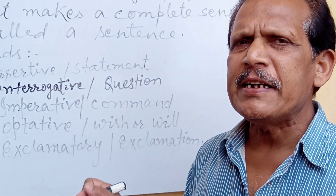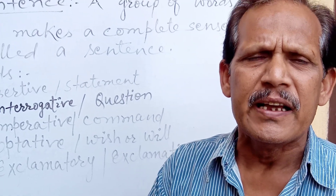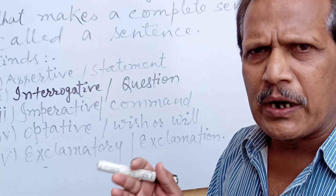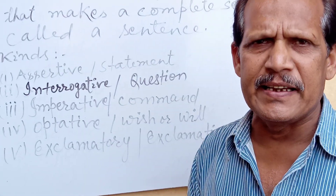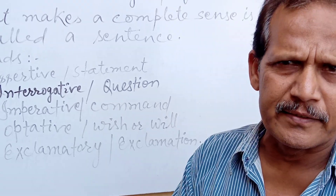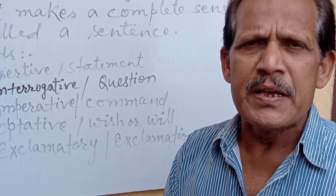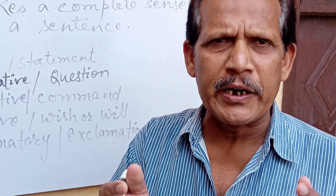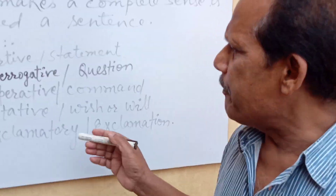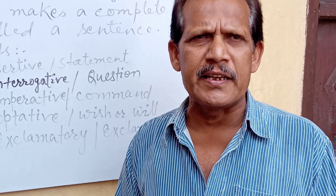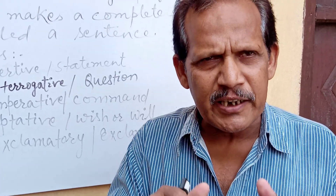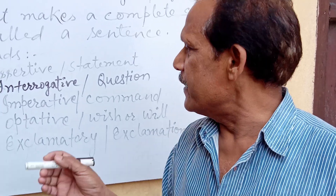The fourth is the optative sentence. Modern grammarians have not accepted it separately — they have merged it with the exclamatory sentence. The definition of an optative sentence is: a sentence that shows a heartfelt desire — not a common desire, but one connected to your emotions. For example: 'May God bless him with good health' — that is your heartfelt desire, and such a sentence is an optative sentence.